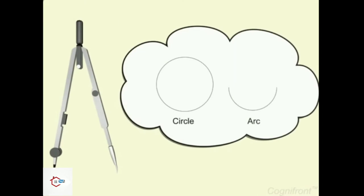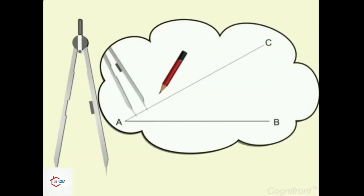As you already know, the compass is used for drawing circles and arcs. The divider is a little different with both legs made of steel and is used for transferring distances.